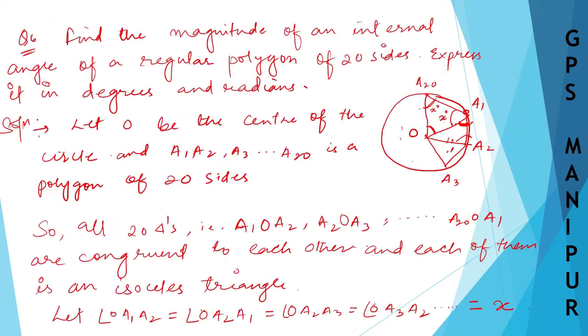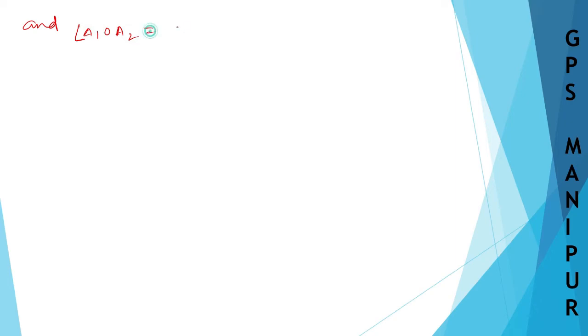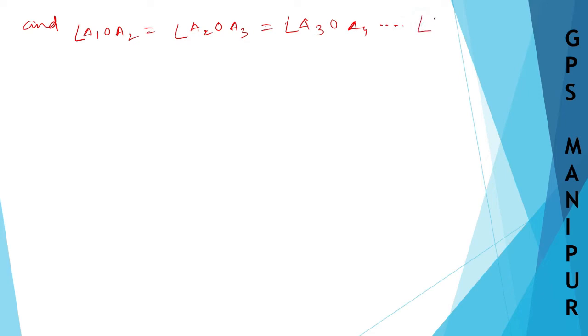And the central angle: angle A1OA2 equals angle A2OA3 equals angle A3OA4, and so on, until angle A20OA1. Since all 20 triangles are congruent, each central angle is equal.